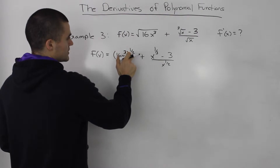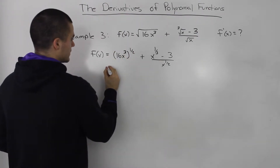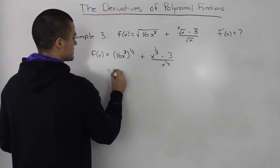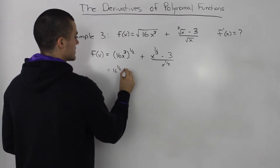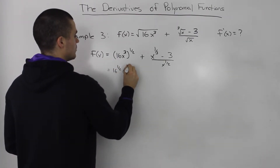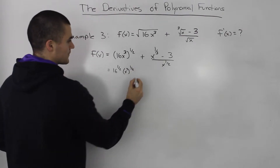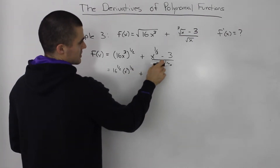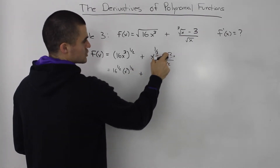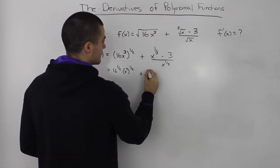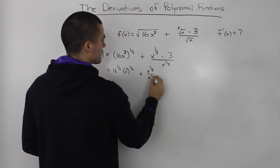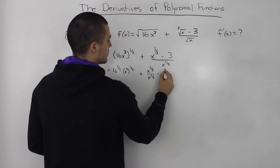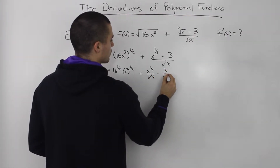Now I'm going to distribute this exponent inside the bracket. We'll have 16 to the power of 1 half, and x cubed to the power of 1 half as well. Then I'm going to split up this numerator into two fractions: x to the power of 1 third over x to the power of 1 half, minus 3 over x to the power of 1 half.